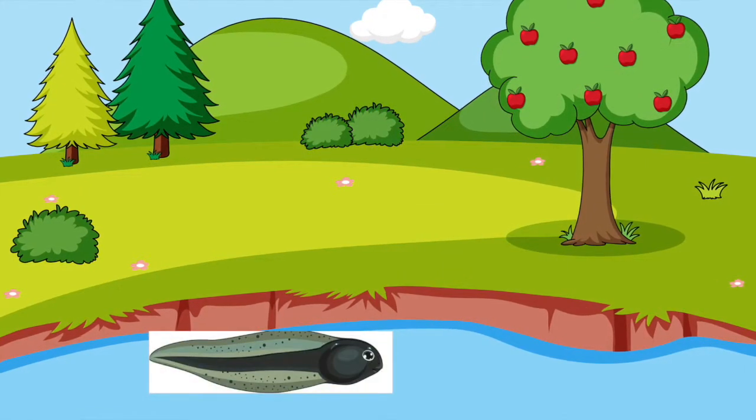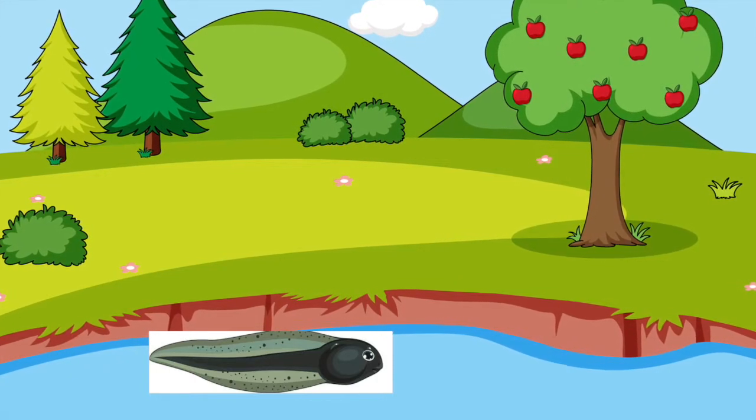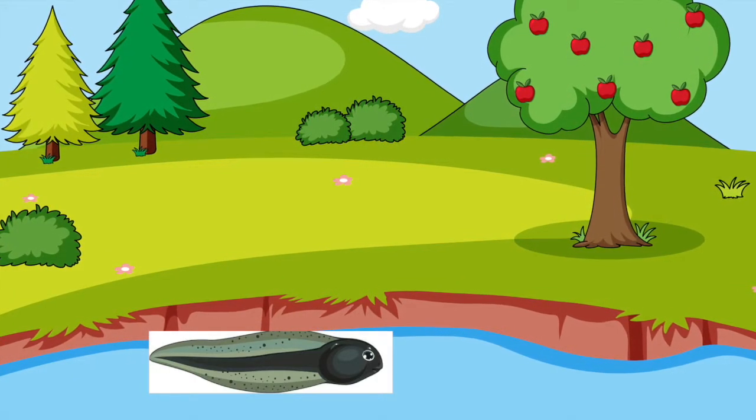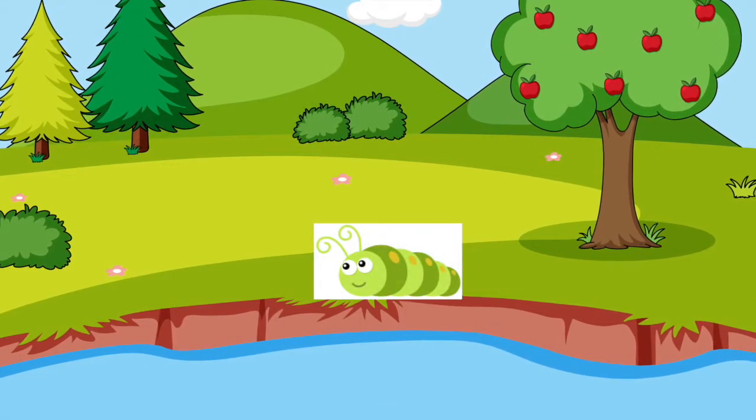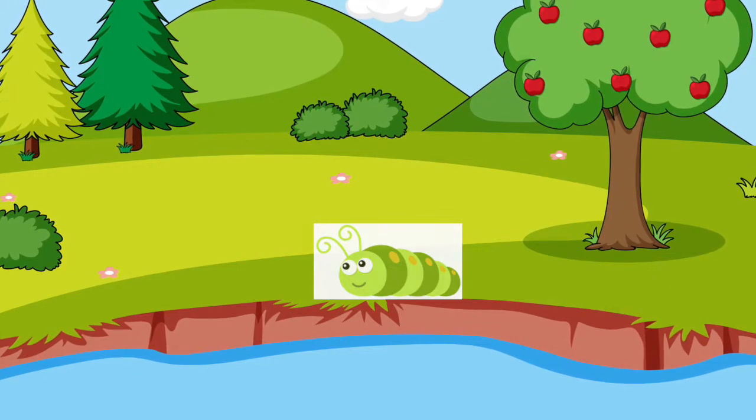However, there was one slight problem. Whenever caterpillar suggested things to do on land, tadpole was not able to leave the water. And whenever tadpole wanted to do something in the water, caterpillar could not join in because he was not that strong of a swimmer.